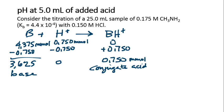And this is before the equivalence point, so we can use the Henderson-Hasselbalch equation, which is pH equals pKa plus the log of the base over the acid.